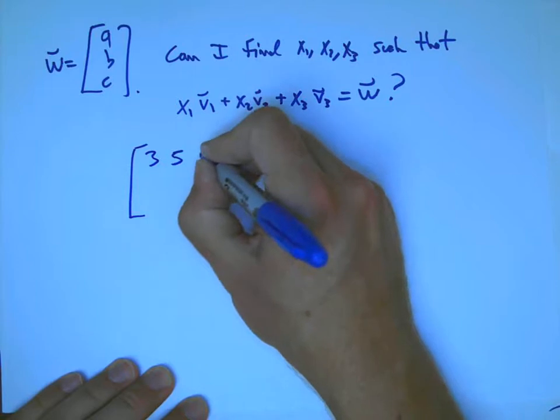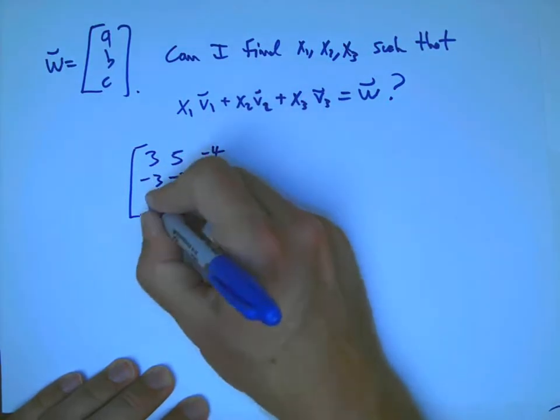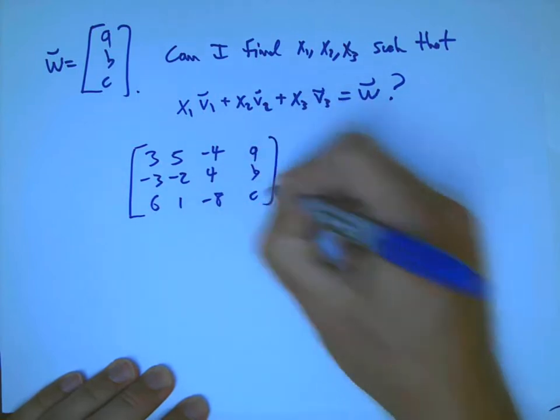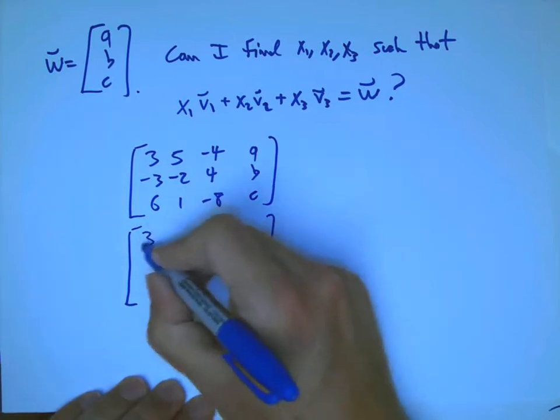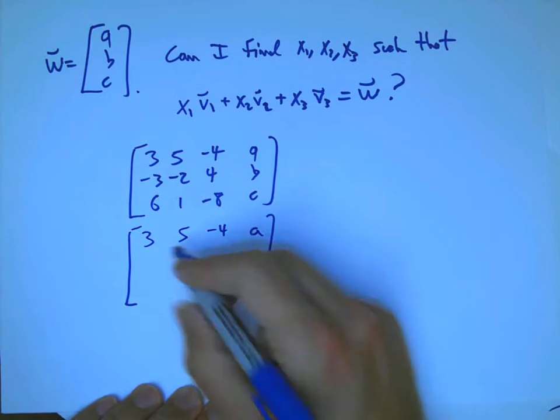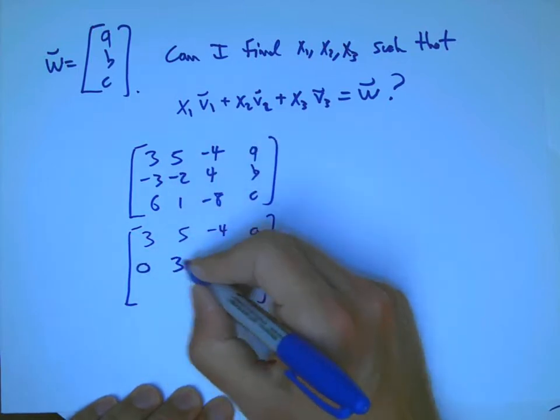All right. So let's write that down. Let's just do the manipulations here and then see what's up with that. So I'm going to do the same reduction steps, but now I have to pay attention to what's going on on the right-hand side. I'm going to add the first row to the second row.